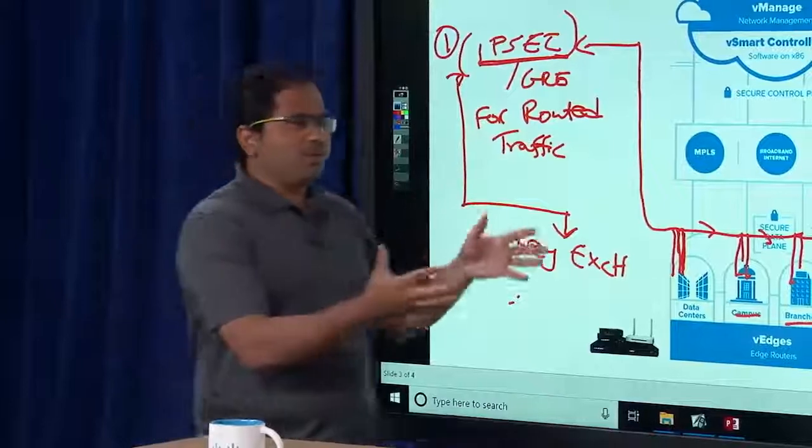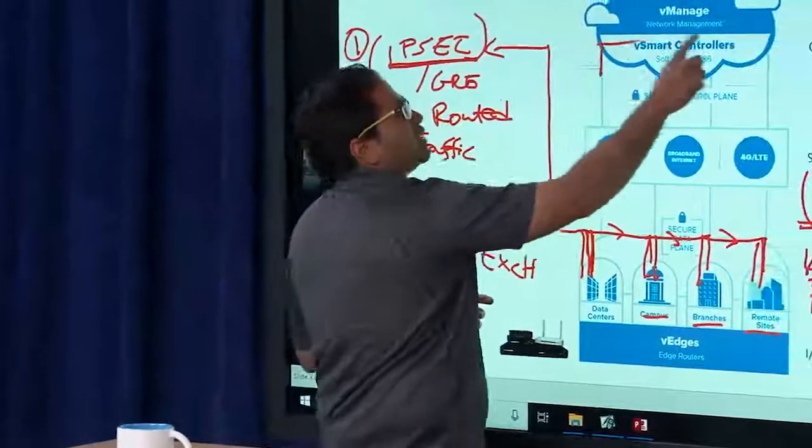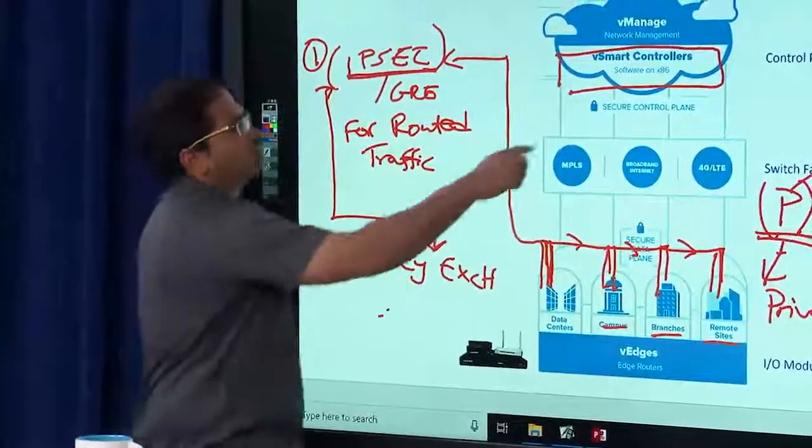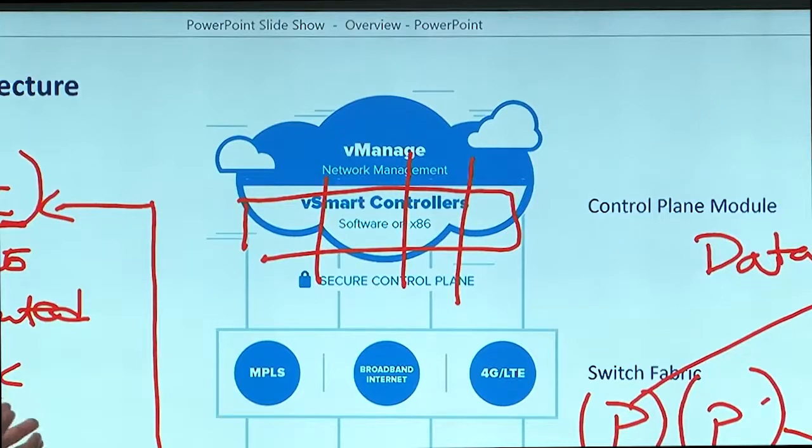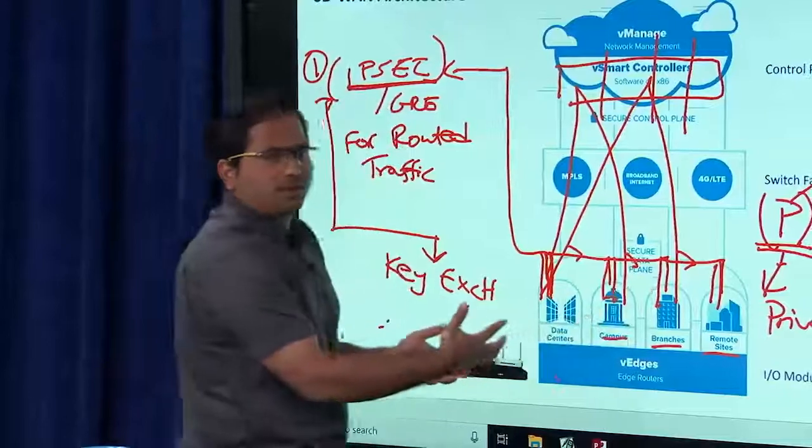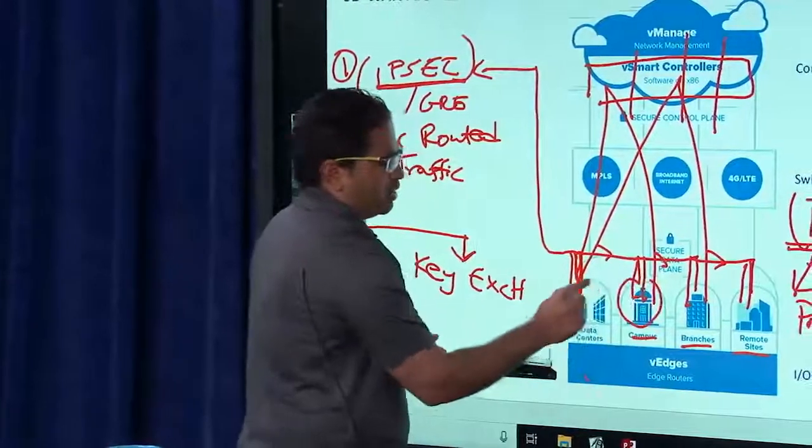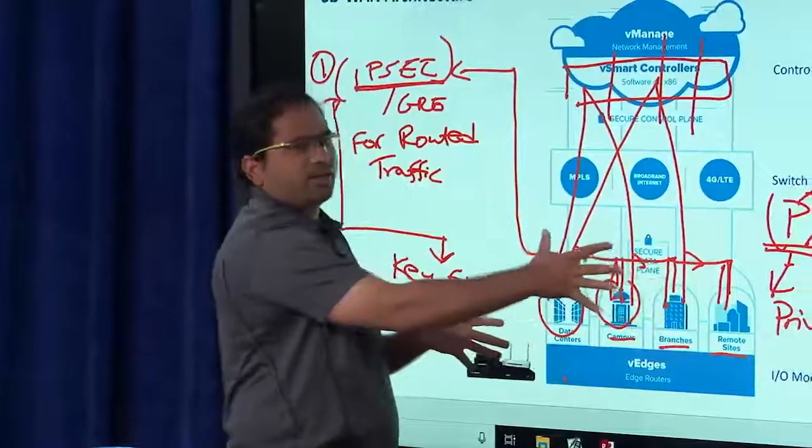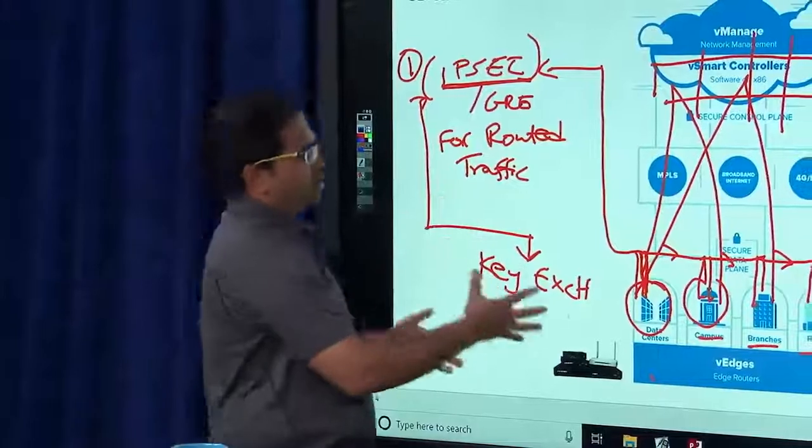What's the component that can help me exchange these keys? There's one component that's common to everyone. Everyone connects to the controllers, the Vsmarts. So the Vsmarts not only contain the routing information base, like we discussed before, now also act as key exchange servers. Everyone reflects their keys from one end to the other to let everyone know how to actually get data from one edge device to the other edge device over the unsecure internet. So the Vsmart is a key exchange server as well. That's how the data plane bring up essentially consists of this.